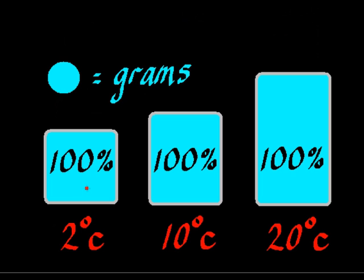Here is a diagram showing this parcel of air at three different temperatures containing the maximum amount of water that that parcel can hold at each temperature. Generally, the maximum amount of water which a parcel of air can hold is when it's at a relative humidity of 100%. The light blue colour denotes the amount of water vapour contained in this parcel, measured in grams, which is known as the absolute humidity.